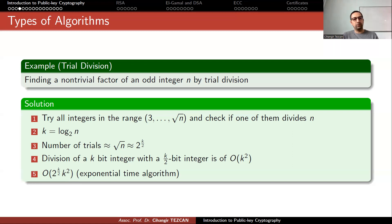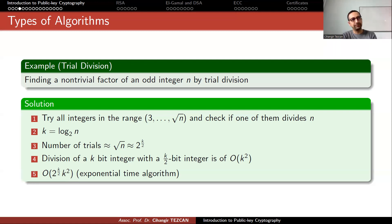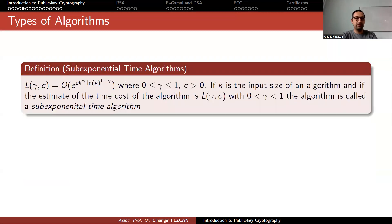Just by looking at this one solution, we cannot say the problem itself requires exponential time, because this is only one solution. If someone finds a polynomial time solution, we would say the problem is easy. In fact, we don't have any polynomial time solution to factorization, but we do have sub-exponential time solutions — somewhere between polynomial and exponential time.